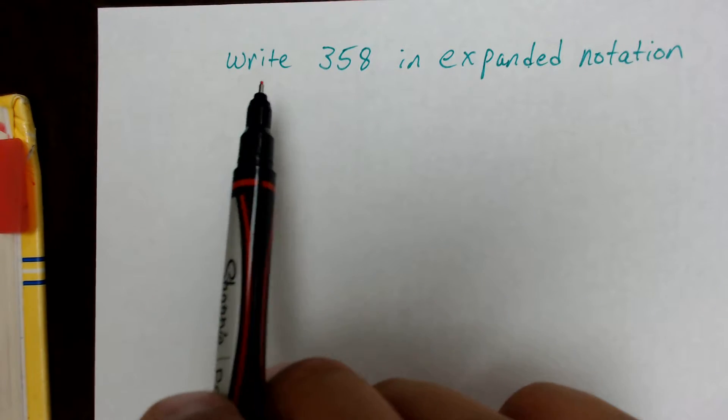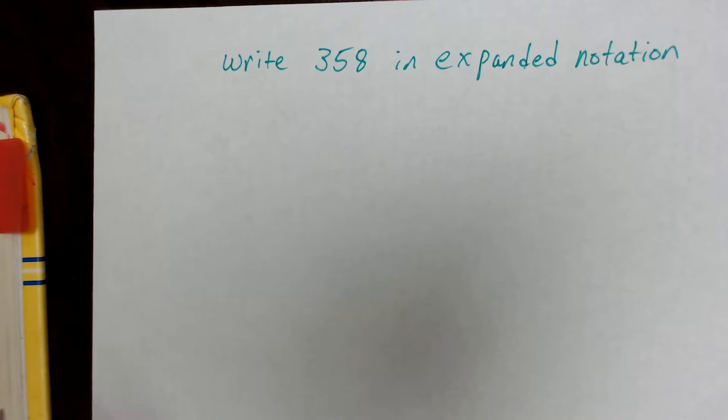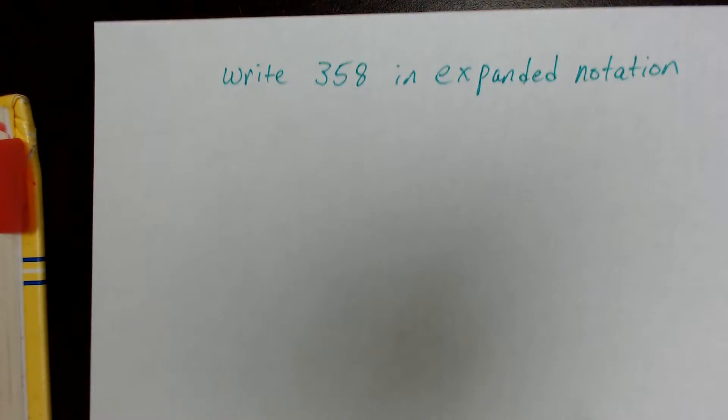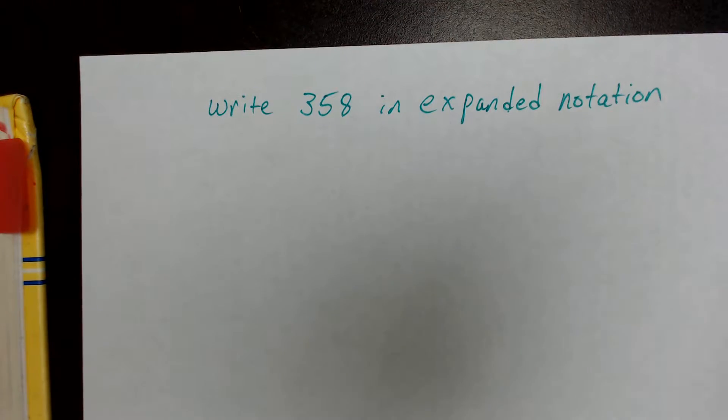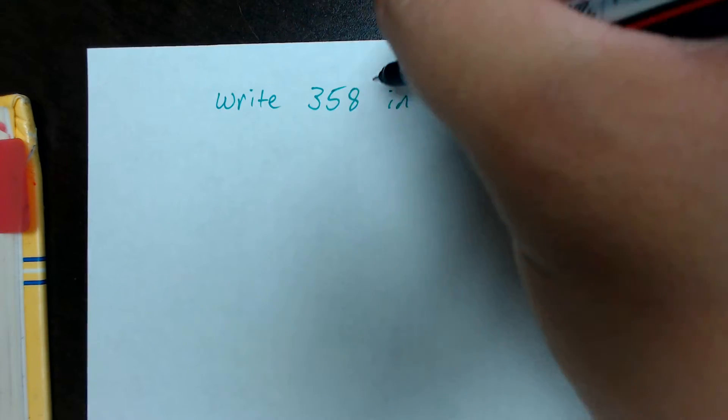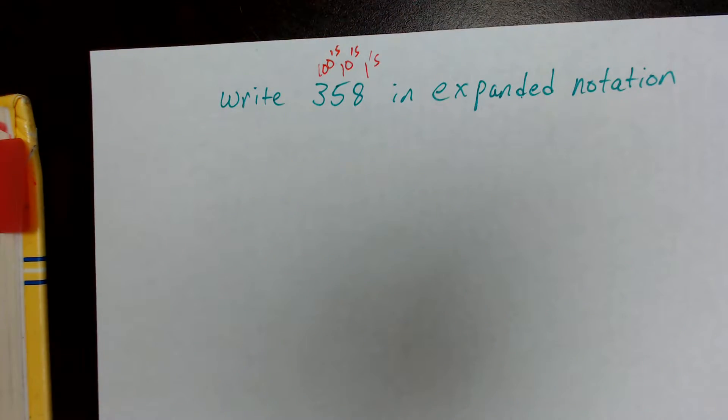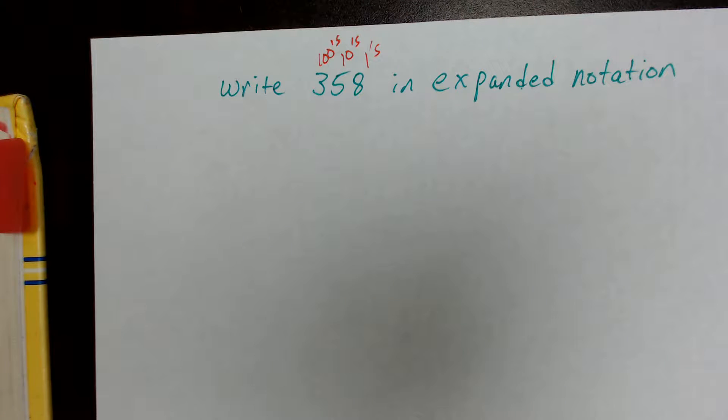Your book is going to ask you to write the number 358 in expanded notation. Well, the only thing that expanded notation cares about is place value. For example, this 8 is in the ones place value, this 5 is in the tens place value, and this 3 is in the hundreds place value. So expanded notation separates this number based on place value.